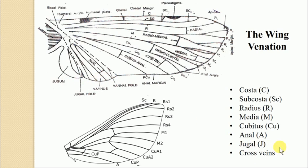The next vein is the jugal vein, designated by capital J. Whatever veins are present in the jugum region are referred to as jugal veins. These veins occur in a jugal loop; their number may vary, but commonly there are two — the first and second jugal veins. They are short, unbranched, and concave in appearance, lying just beneath the jugal fold which separates the anal area from the jugum.